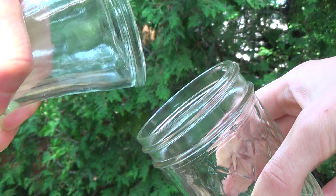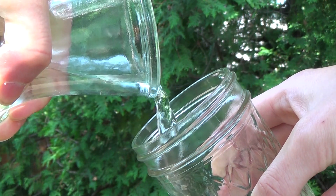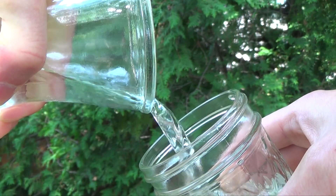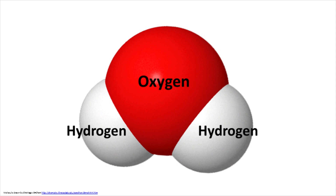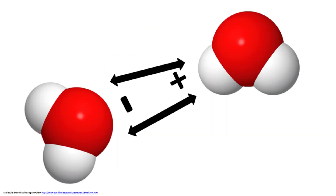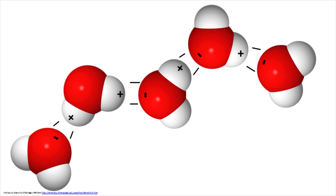In order to understand transpiration, we have to start by talking about the water molecule. The water molecule, also known as H2O, is made up of two hydrogen atoms and one oxygen atom. The oxygen atom has a slight negative charge, while the hydrogen atoms have a slight positive charge. Like with magnets, opposites attract. The negative oxygen will attract the positive hydrogen of another water molecule. Water molecules will link up one after another in this way to form a chain that can withstand a lot of tension.